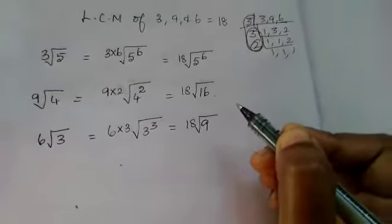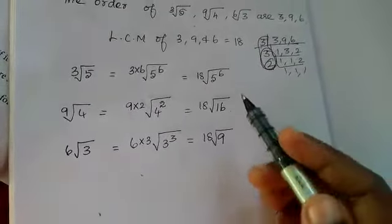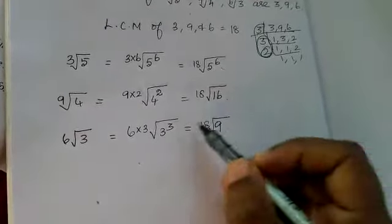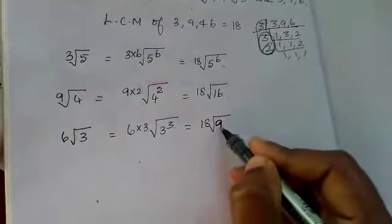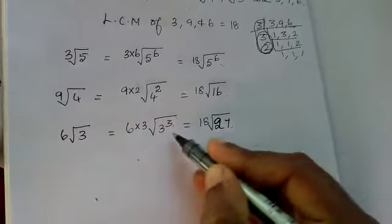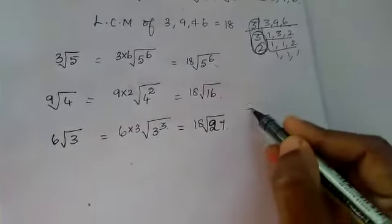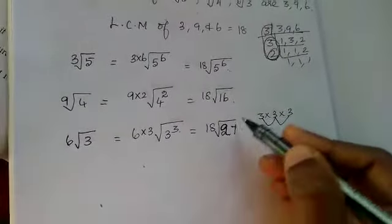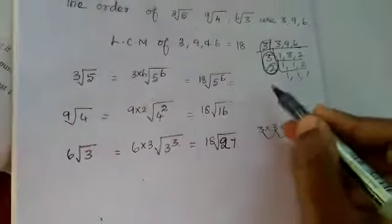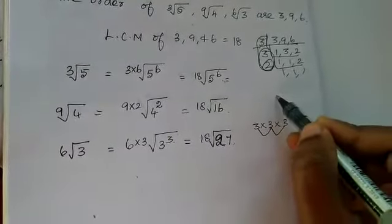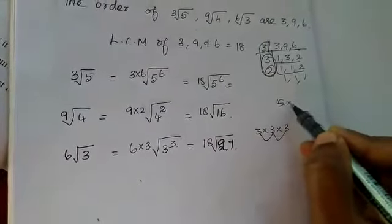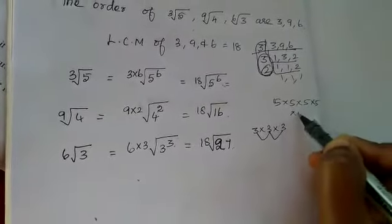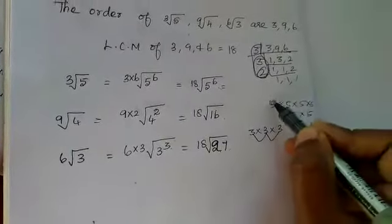Now we want to arrange the numbers in descending order. Here which one is biggest? This one is biggest. 3 cubed. 3 cube means what? 3 times 3. 3's are 9, 3's are 27. In the same manner, expand 5 power 6. What is the answer? 5 into 5, 6 times. 5's are 25.